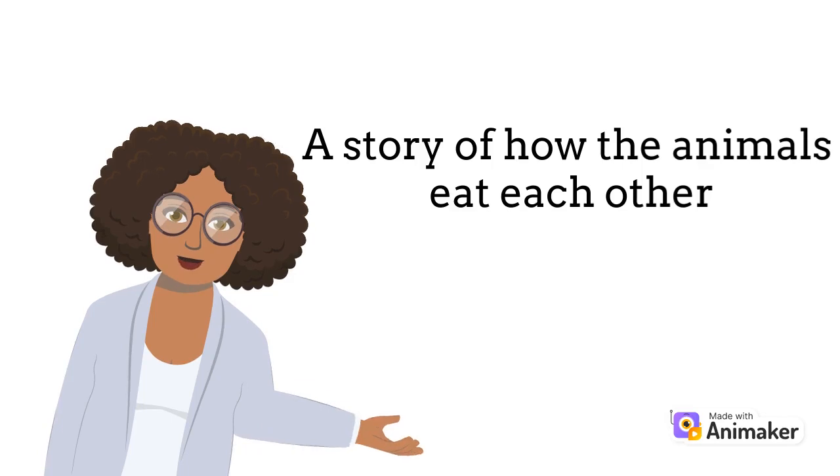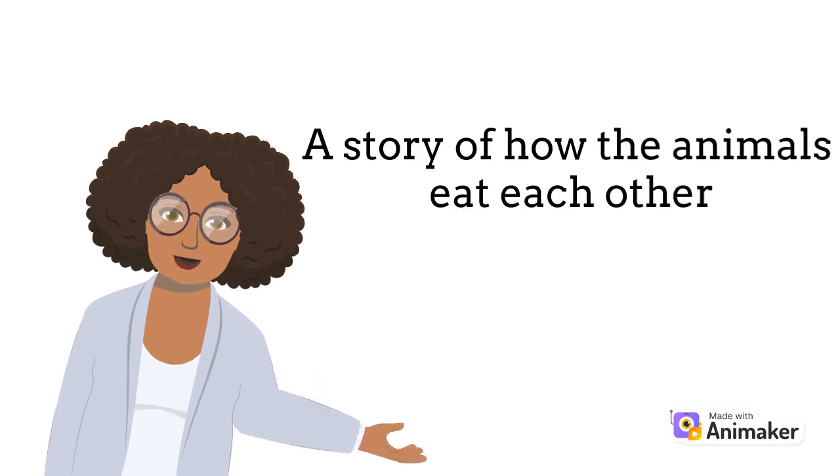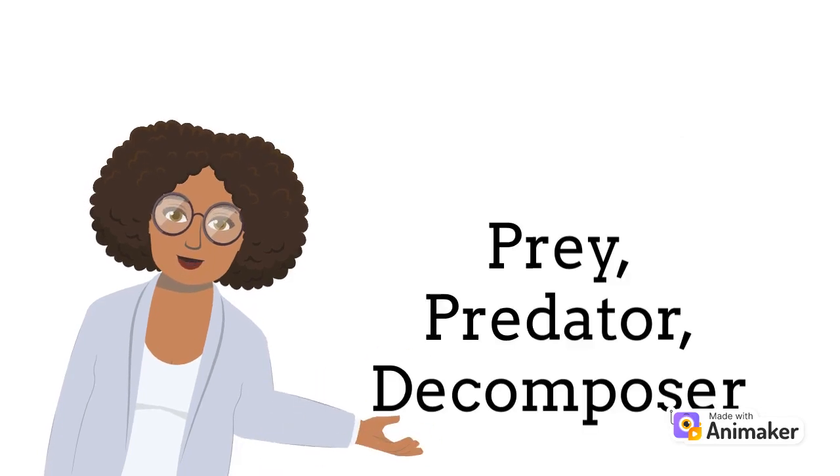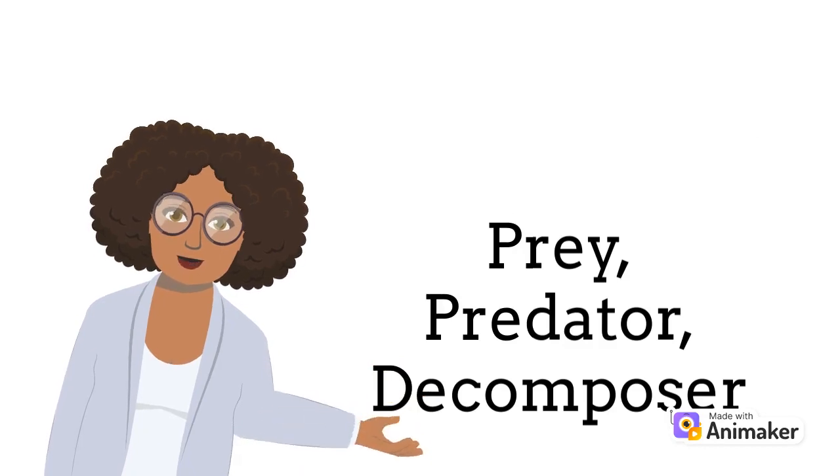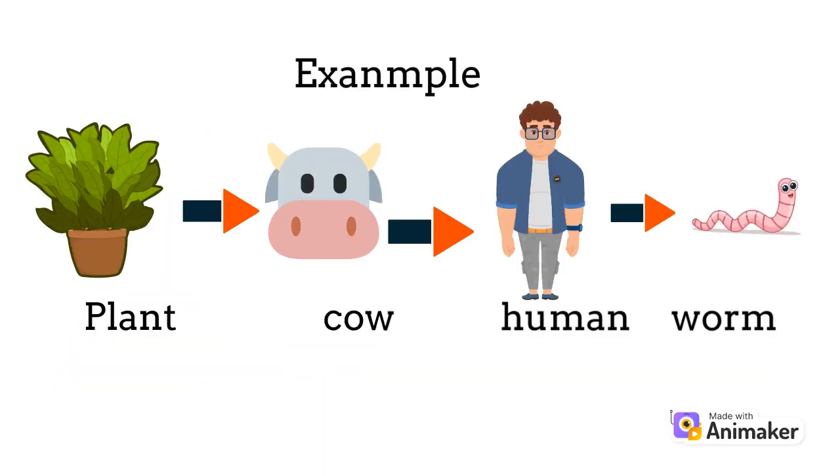A food chain is a story of animals of what and how they eat each other. Specific vocabulary is prey, predator, and decomposer. Here is a very little example: a plant is eaten by cow, the cow by a human, and a human by a decomposer. Isn't it easy?